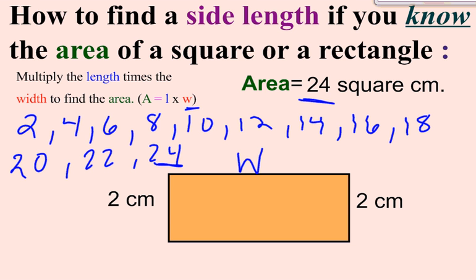They got to 24 and that was 1, 2, 3, 4, 5, 6, 7, 8, 9, 10, 11, 12 times. Therefore, that means that W equals 12. W equals 12, so this side is 12 centimeters. That was one strategy. Some also use division and they could divide 24 by 2 to figure out the missing side.